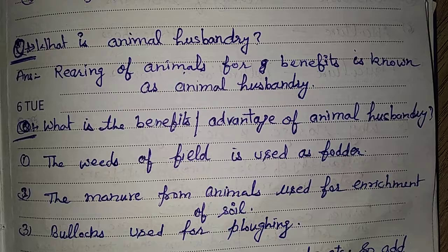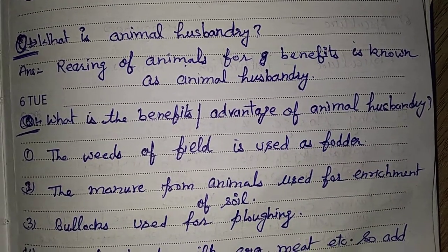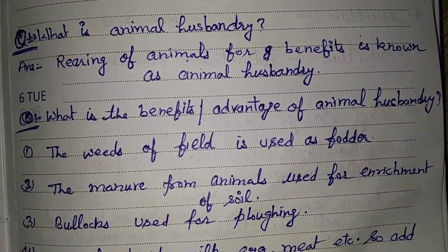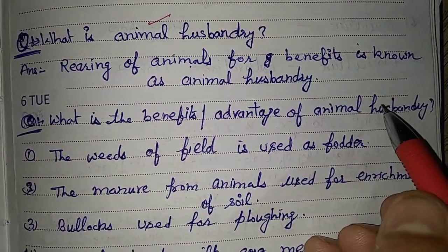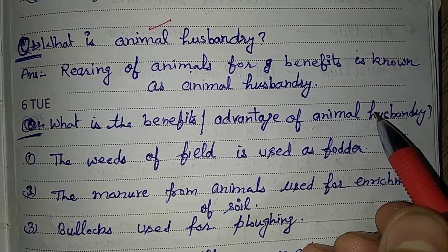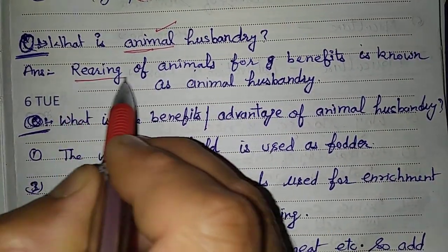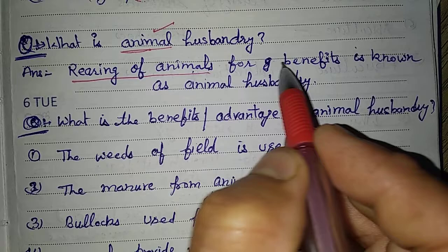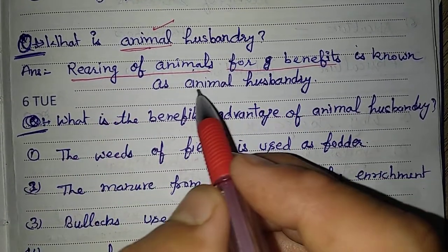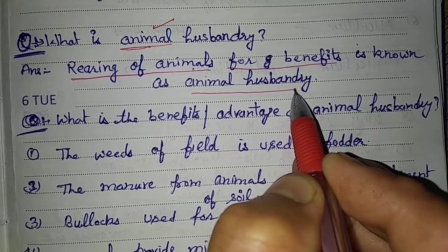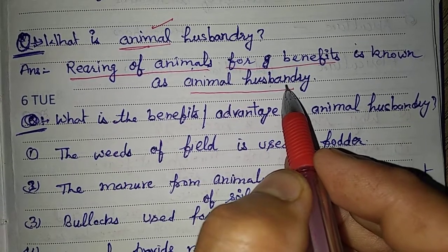While growing crops in the field, farmers mostly also raise animals alongside. Those who have fields — they keep animals like cows and buffalo alongside their crops.